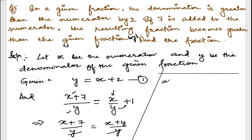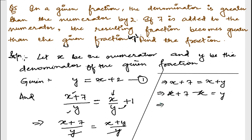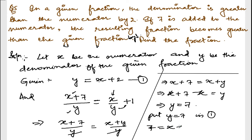So x plus 7 is equal to x plus y. Transferring: x plus 7 minus x equals y, and x cancels out, so y is equal to 7. Now putting y equal to 7 in equation number 1: 7 equals x plus 2, so x equals 7 minus 2, which is 5.